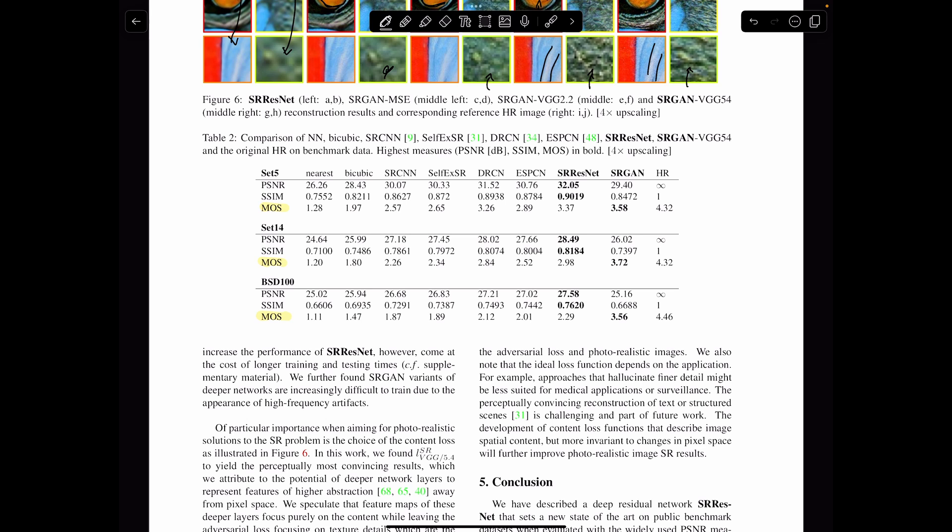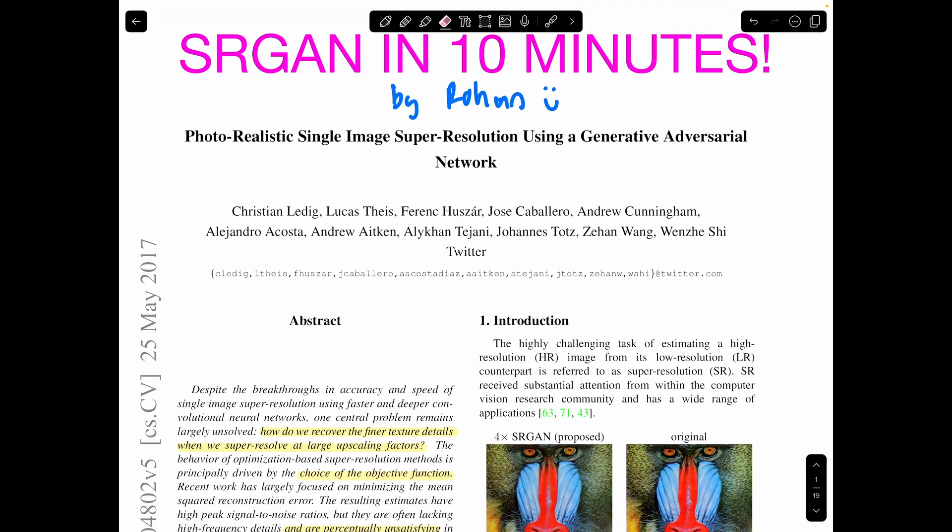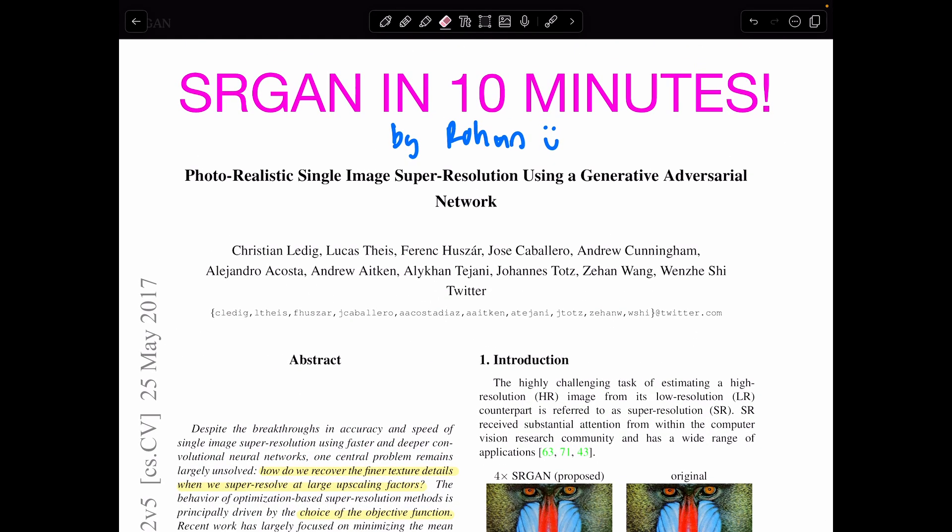And then last thing, it's the same thing here. So mean opinion score, it excels at that. And it gets really close, actually, to the high resolution images. And the high resolution image is essentially the perfect score you can get. So that was Super Resolution GAN in 10 minutes. Thank you very much, and I'll see you in the next one.